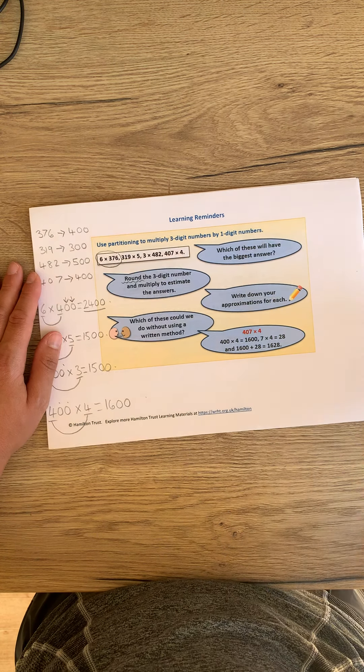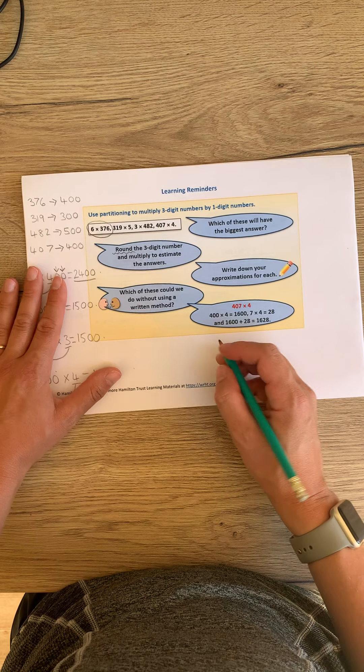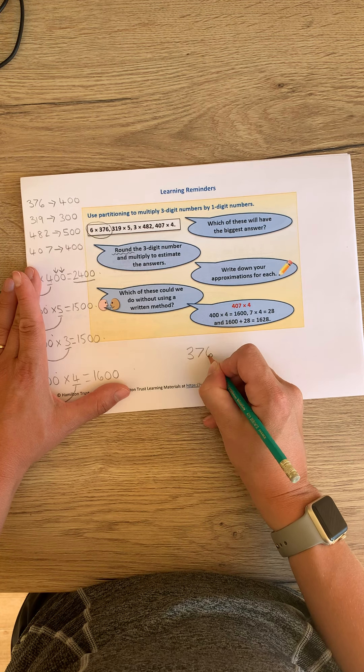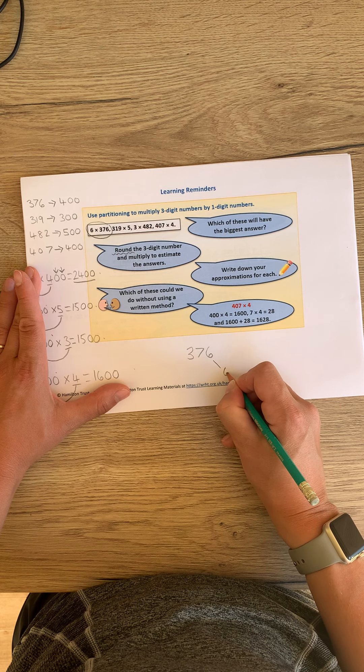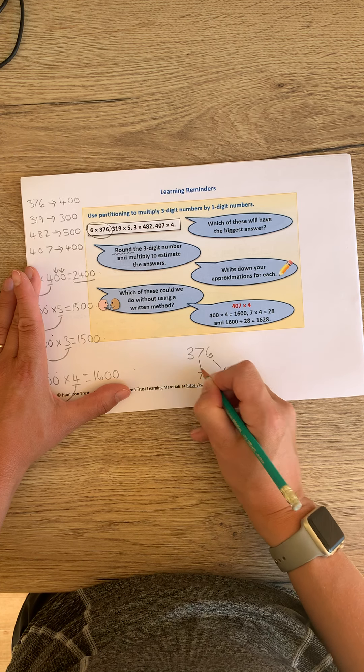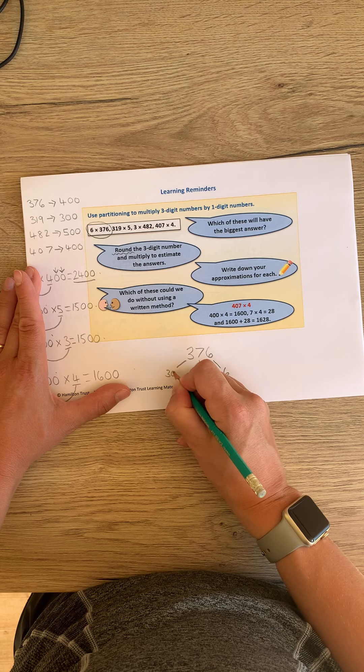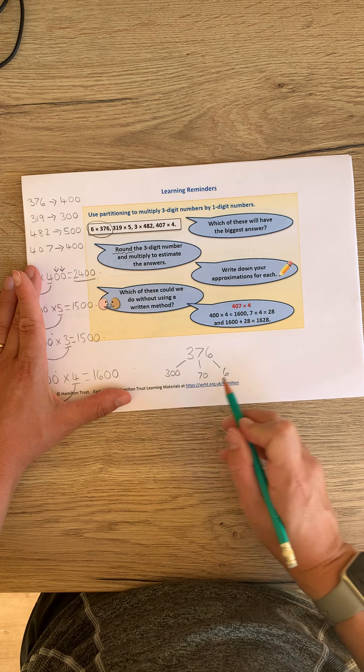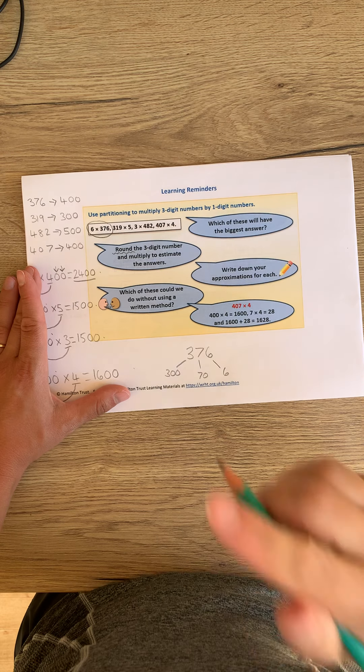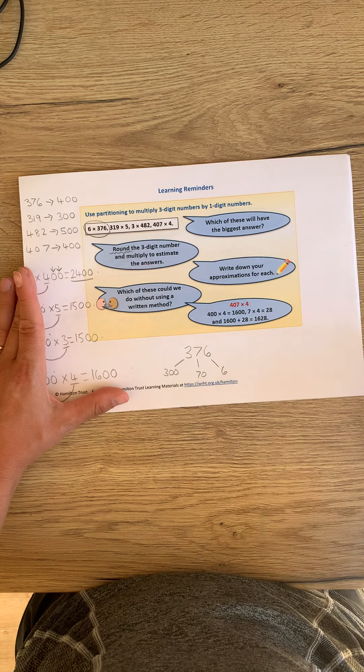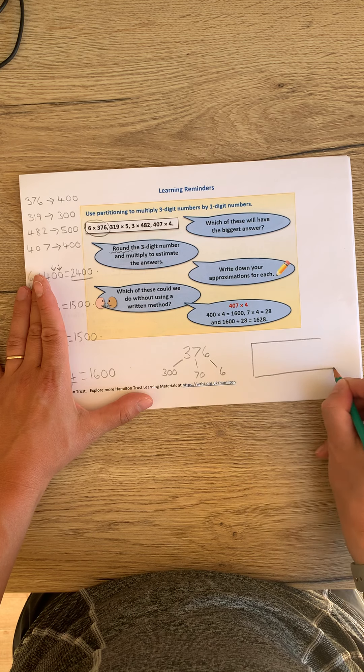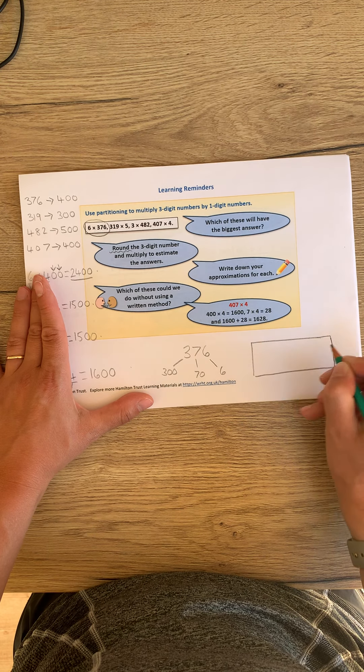6 multiplied by 376. First of all, I need to partition 376, like this, into my 1s, into my 10s, and into my 100s. Well done if you've got 376. And I then need to pop these into a grid. So this is my grid, a little bit wonky, but that's okay. Hopefully, you'll be able to use your squares in your books.